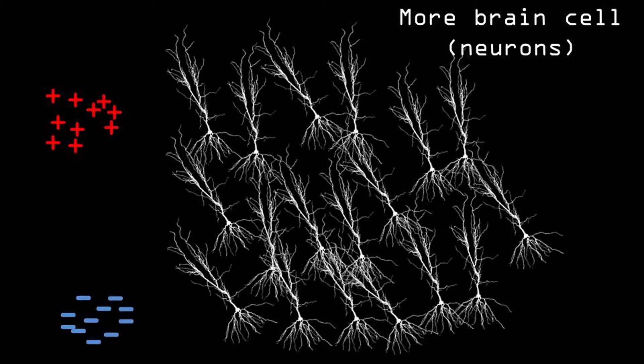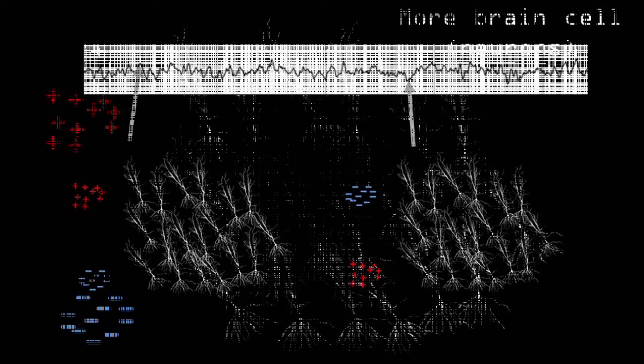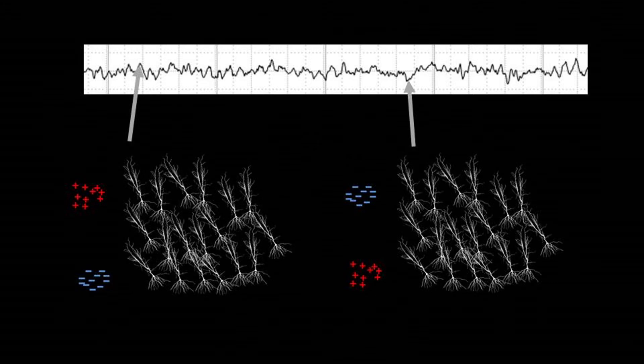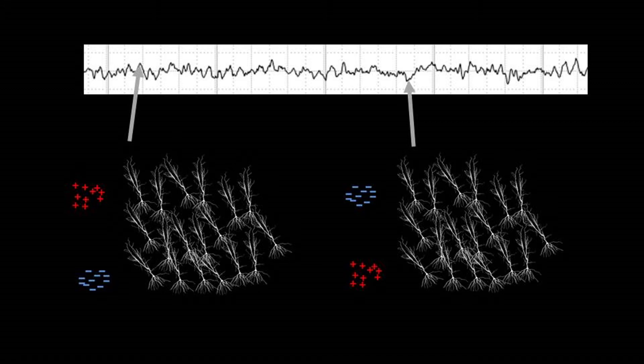However, keep in mind that the signal is still very, very small and it's first amplified before we can actually read it. Depending on the directionality of the charge, the signal that we measure either goes up or down. Now you may think those signals are looking really nice, but what do they actually tell us?